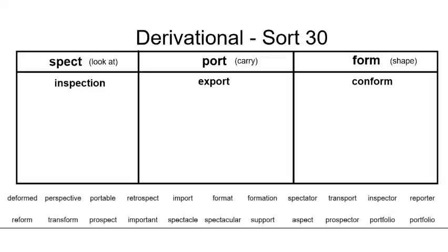Let's get started with the Latin root 'spect.' Spect means to look at. When we add the prefix 'in,' we add the meaning of 'into,' so it means look into something. But when we add the suffix 'ion,' it means the act of. So our word literally means the act of looking into something.